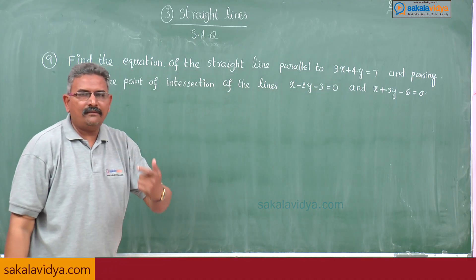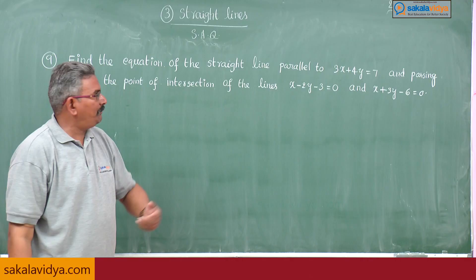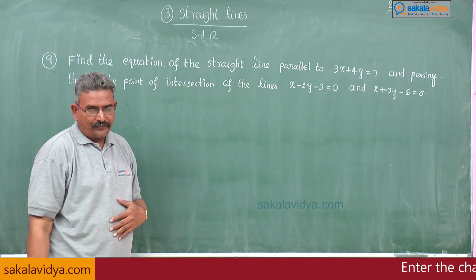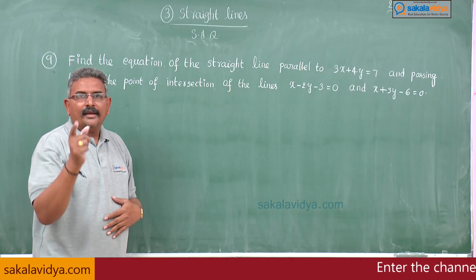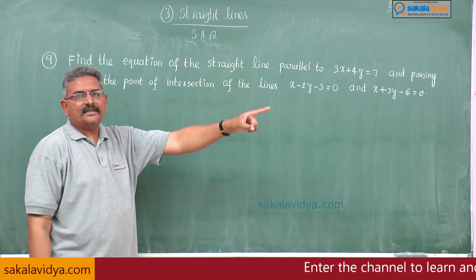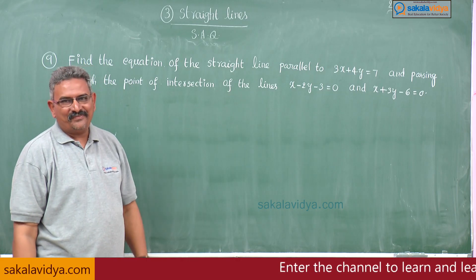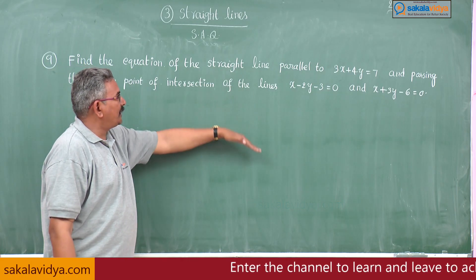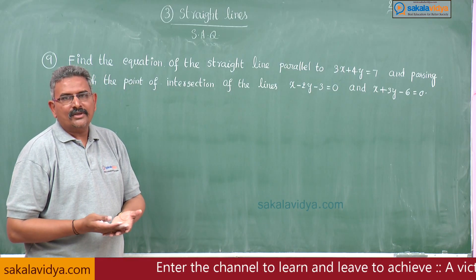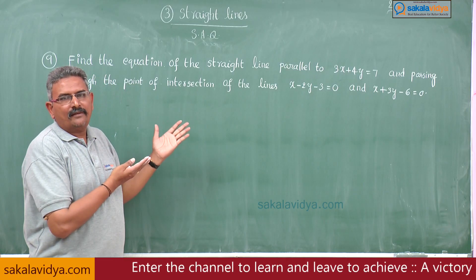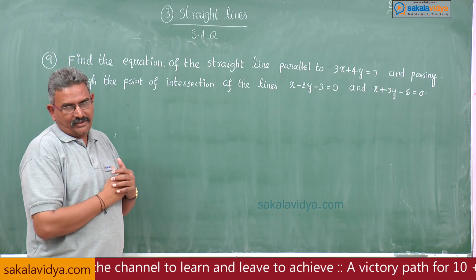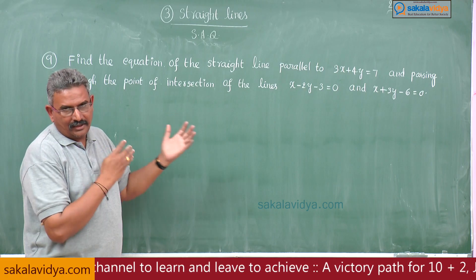Any equation of the line parallel to 3x plus 4y is equal to 7 can be taken as 3x plus 4y plus k is equal to 0. Since it passes through the point of intersection, the k value will be evaluated and we get our answer.